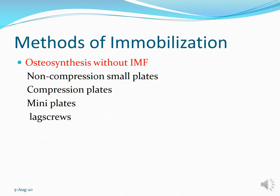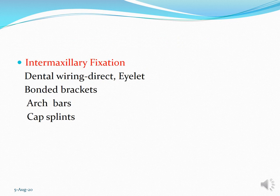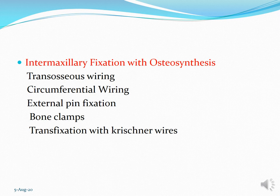How would you immobilize the fracture? IMF — intermaxillary fixation — involves tying the mandible to the maxilla so that movement will not happen and osseous healing takes place. Without IMF, you can use non-compression small plates, compression plates, miniplates, and lag screws. With IMF, the methods include all the wiring techniques: direct wiring, eyelet wiring, bonded brackets, arch bar, and cap splints. For IMF with osteosynthesis: transosseous wiring — direct wiring across the fracture line with holes drilled on either side and stainless steel wire passed through and tightened; circumferential wiring — wire passed through the proximal segment and lower border in an oblique fracture controlling the distal fragment; external pin fixation; trans-fixation with K-wires; and board clamps.